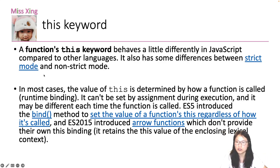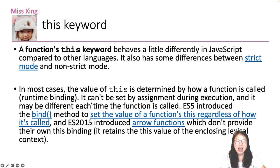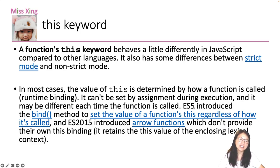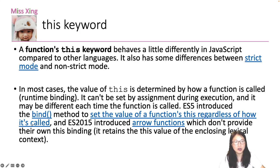In most cases, the value of `this` is determined by how a function is called — it's a runtime binding. You cannot set it using assignment during execution, and it may be different each time the function is called. ES5 introduced the `bind` method to set the value of a function's `this` regardless of how it's being called.